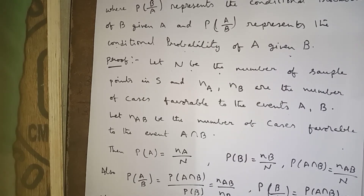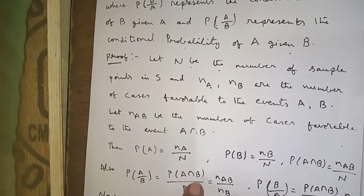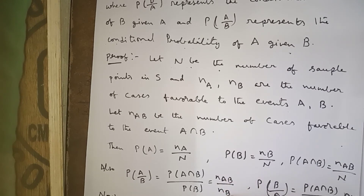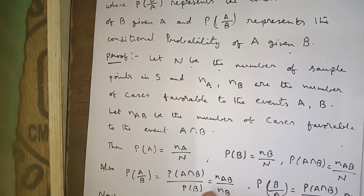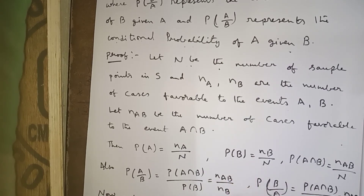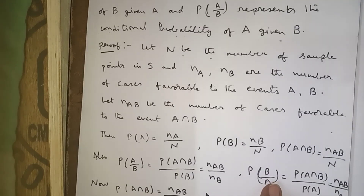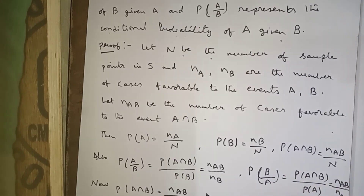Using the conditional probability formula, P(A | B) = P(A ∩ B) / P(B). Substituting, P(A | B) = (N_AB / N) / (N_B / N) = N_AB / N_B. Similarly, P(B | A) = P(A ∩ B) / P(A) = N_AB / N_A.